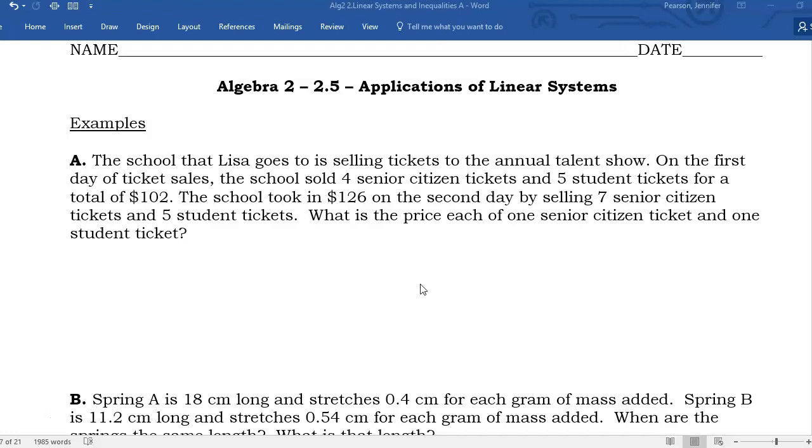Example A: The school that Lisa goes to is selling tickets to the annual talent show. On the first day of ticket sales, the school sold four senior citizen tickets and five student tickets, a total of $102. The school took in $126 on the second day by selling seven senior citizen tickets and five student tickets. What is the price each of one senior and one student ticket?